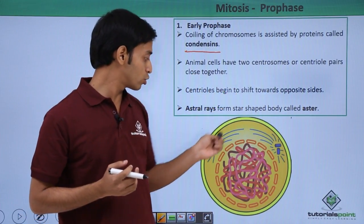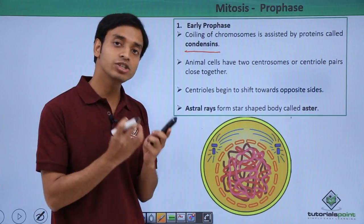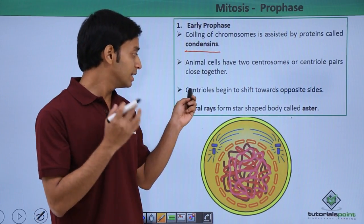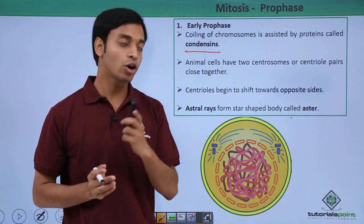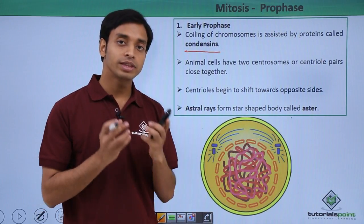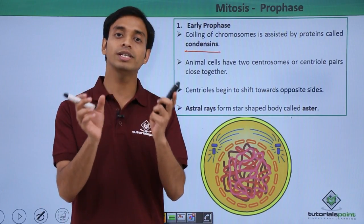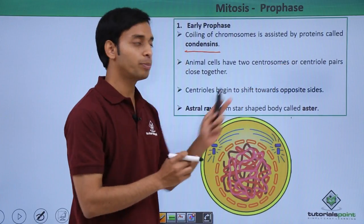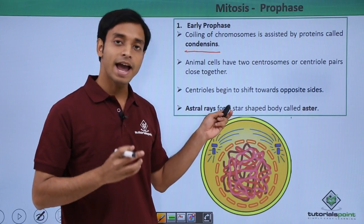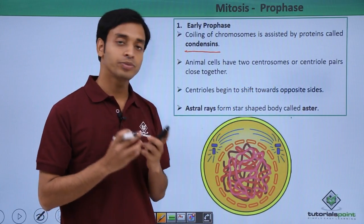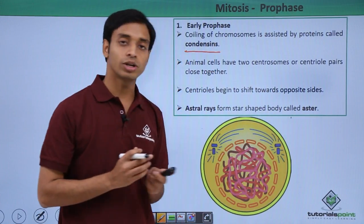Animal cells have two centrosomes, called the central pairs. Initially they remain close together, but these centrioles now begin to shift towards opposite sides. This happens because each central pair starts forming microtubule protein structures, which grow in size and push the centrioles towards opposite poles. These radiating microtubule rays are known as astral rays, and these astral rays along with the centrioles form a star-shaped body known as the aster.